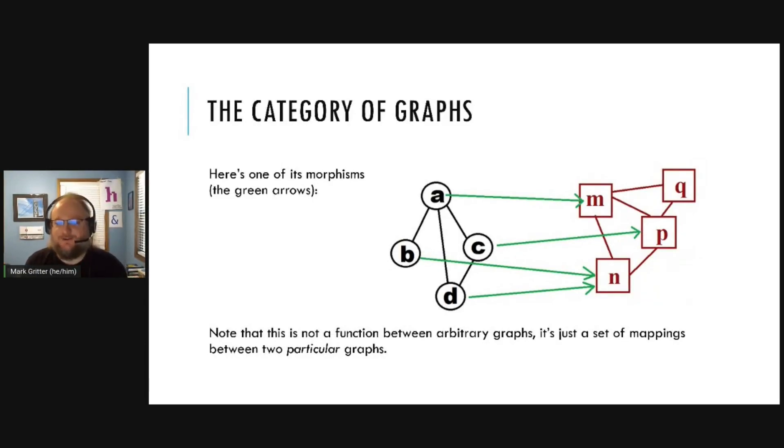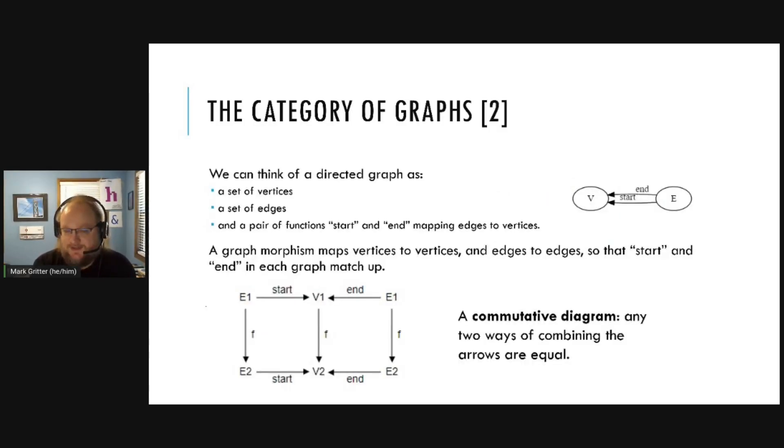This rule is associative. So if you have X, Y, and Z, you can do X, Y first, or you can do Y, Z first, and you get the same answer either way. And every dot has an identity arrow where if you compose X and 1, you get X back. So the category of graphs, the objects are graphs, and the morphisms or the arrows are a function between two graphs, a mapping between two graphs. So it's the green arrows here where we map node A in the source graph to node M in the second graph. We map B to N. And so this edge has to map to this edge. So this is not a function between arbitrary graphs. It's just a set of mapping between two particular graphs. And we can think of a directed graph as a set of vertices, a set of edges, and a pair of functions, start and edge, mapping edges to vertices. And the condition for a graph morphism is it has to map vertices to vertices, edges to edges, so that the start and end in each of the graphs match up.